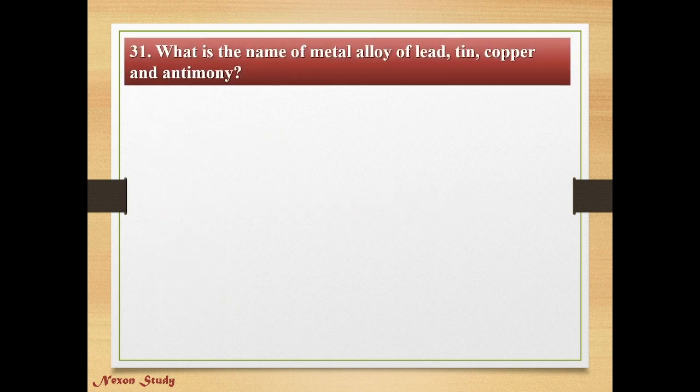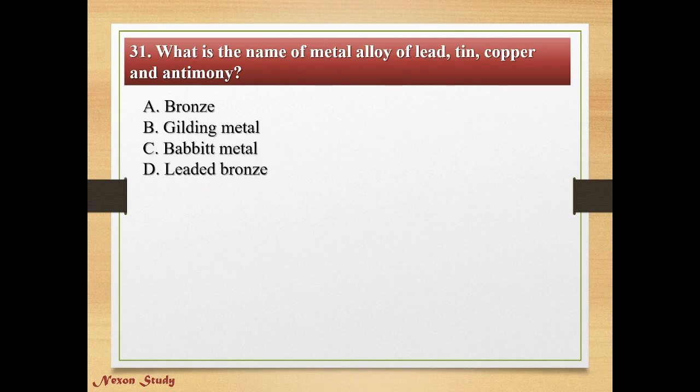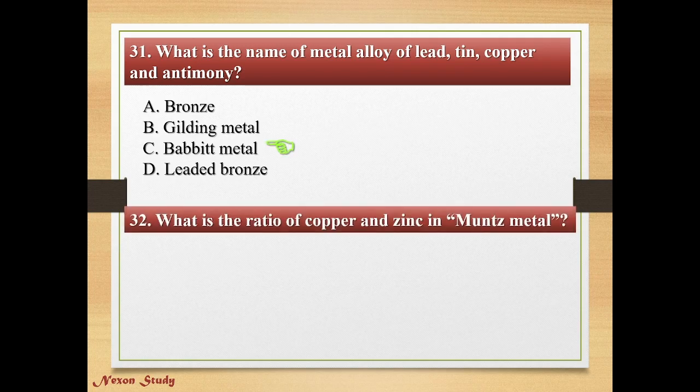Question: What is the name of the metal alloy made of lead, copper and antimony? Options: bronze, sliding metal, babbit metal, leaded bronze. Correct answer is babbit metal. Question: What is the ratio of copper and zinc in muntz metal?